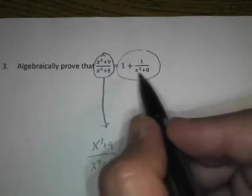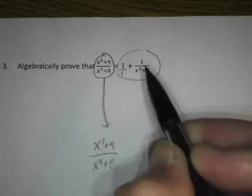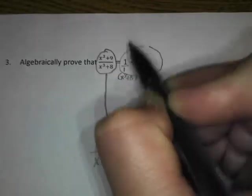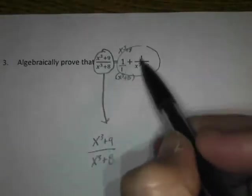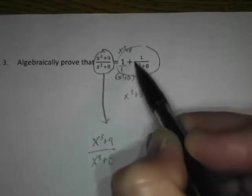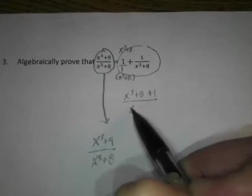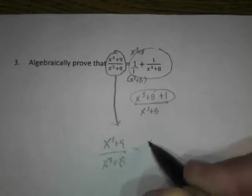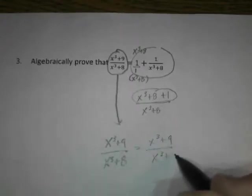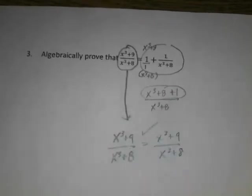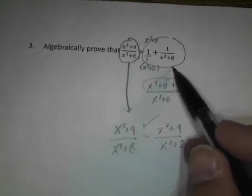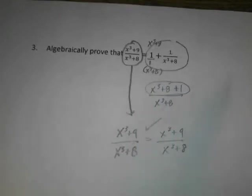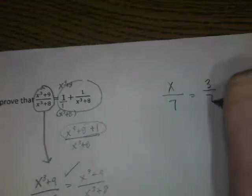So to simplify the right, we obviously have to add the fraction. So if I put this over one and get a common denominator, x cubed plus eight, my numerator becomes x cubed plus eight plus the one, all over x cubed plus eight, which then when you combine the terms in the numerator, you get x cubed plus nine over x cubed plus eight. And they equal, check, it's proven. But a lot of people cross out the denominators. You only drop the denominator if you're solving. That's a solving technique, right?